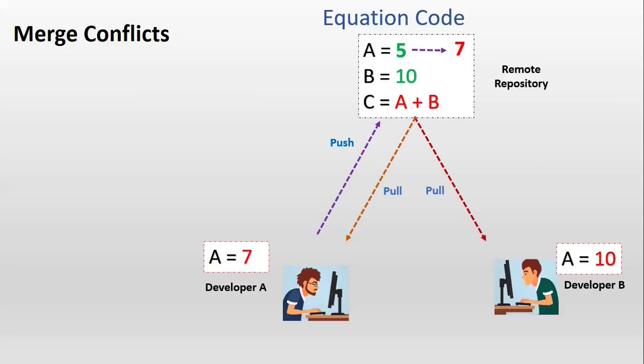So developer B had to pull the remote master branch changes to his local master branch. He started to pull the changes updated by developer A to his local master. Now developer B's local master has A value as 7, and in his development branch he has updated the A value to 10.